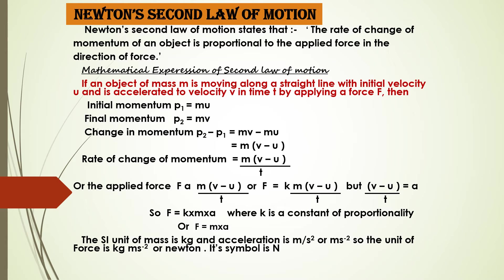So this is Newton's second law: the rate of change of momentum of an object is proportional to the applied force in the direction of force, giving us F = mass × acceleration. The SI unit of mass is kg and acceleration is m/s², so the unit of force is kg·m/s², which is given the name Newton with symbol N. This mathematical expression for the second law is very important — you must learn to derive F = ma.